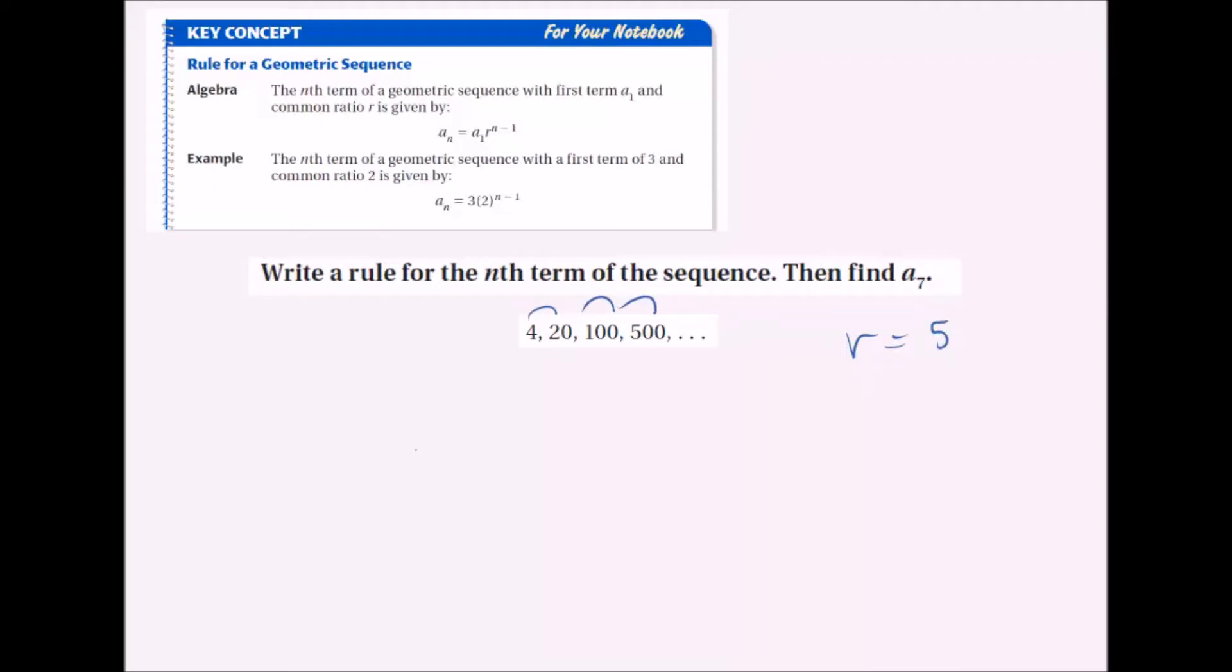Then we're going to use the general formula, a_n equals a_1 times r to the n minus 1. Plug in the information we have. a_n equals a_1, the first term is 4, so I put 4 times 5 to the n minus 1. That's the equation, so that's the rule for the nth term.